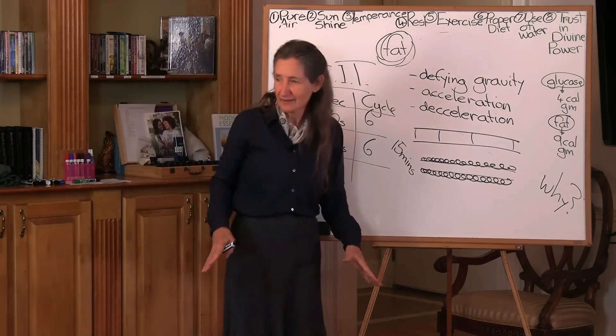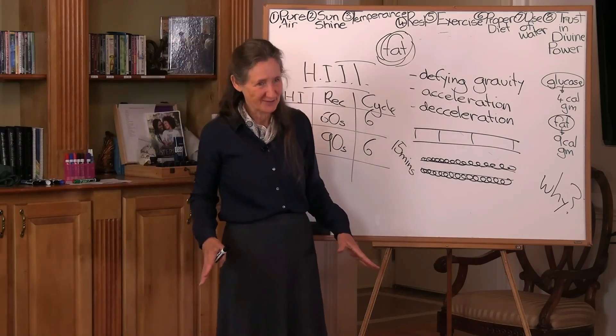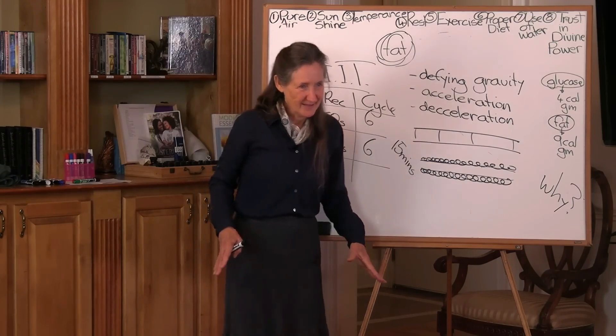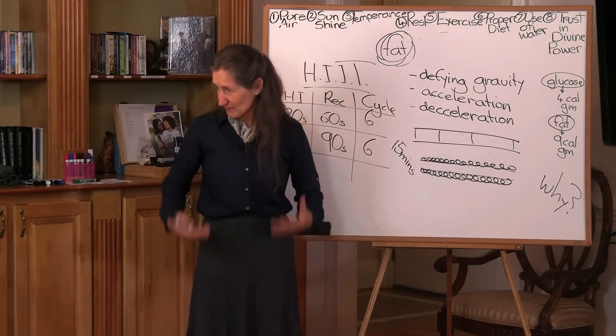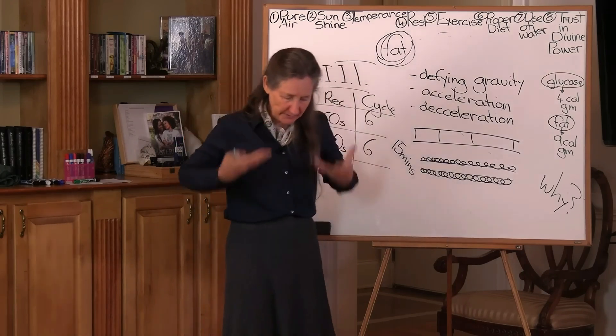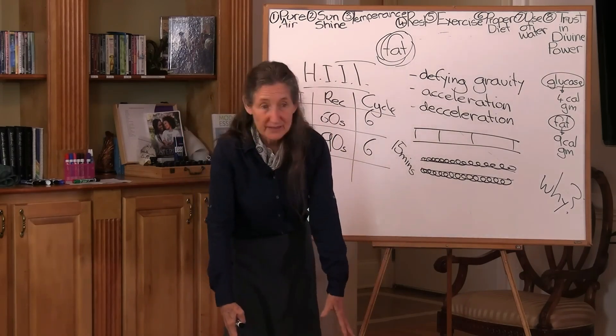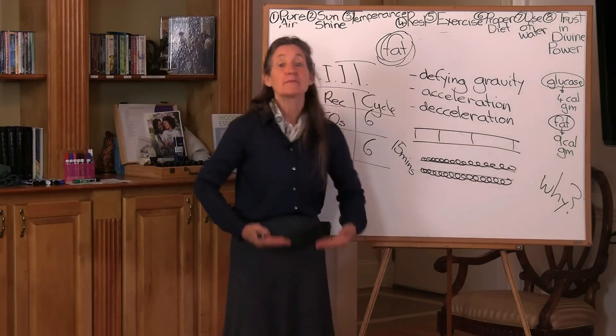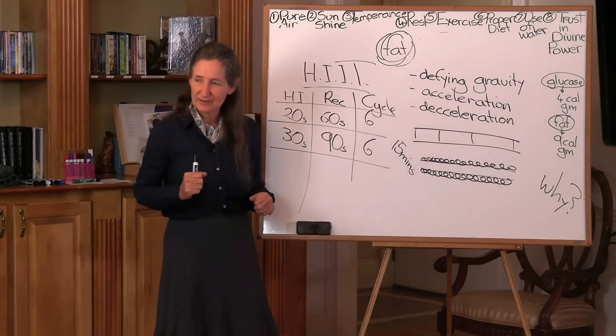Did you know you have a second heart? It's your calf muscle. Do you ever wonder how the blood gets back to the heart? You see, your arterial system is the blood coming away from the heart, and your venous system is the blood coming back to the heart. It is your calf muscles.